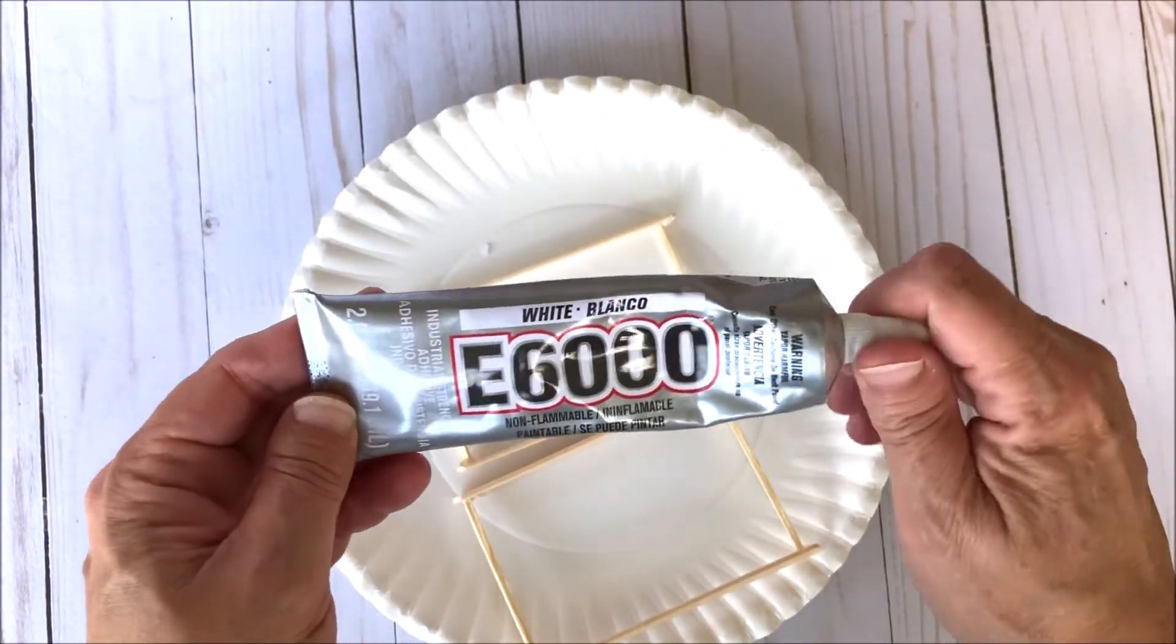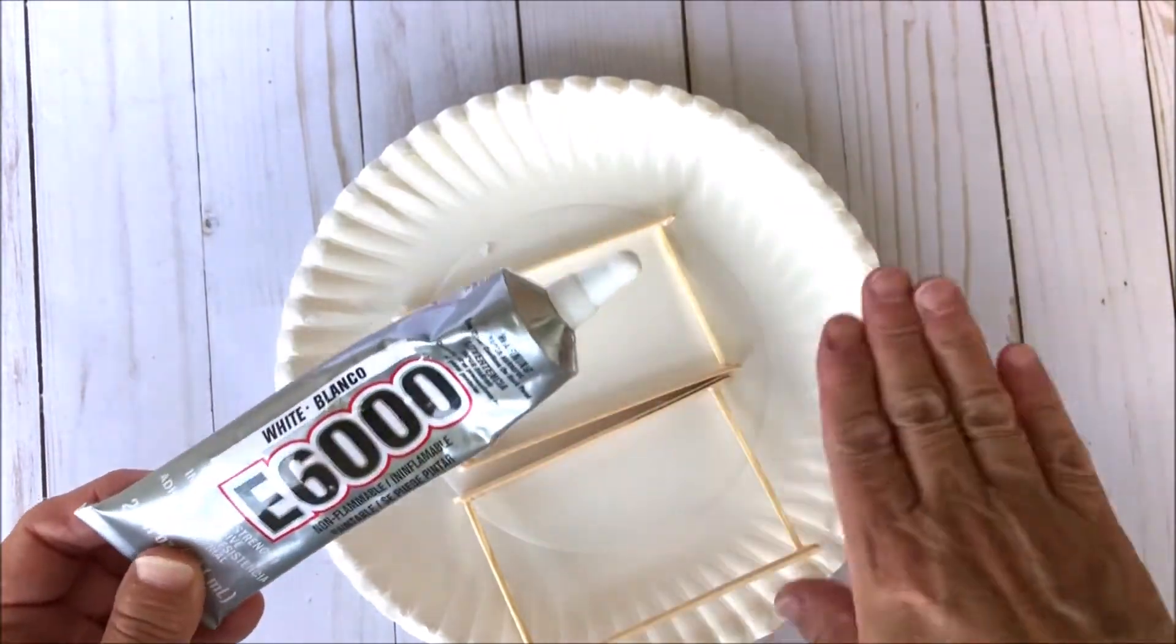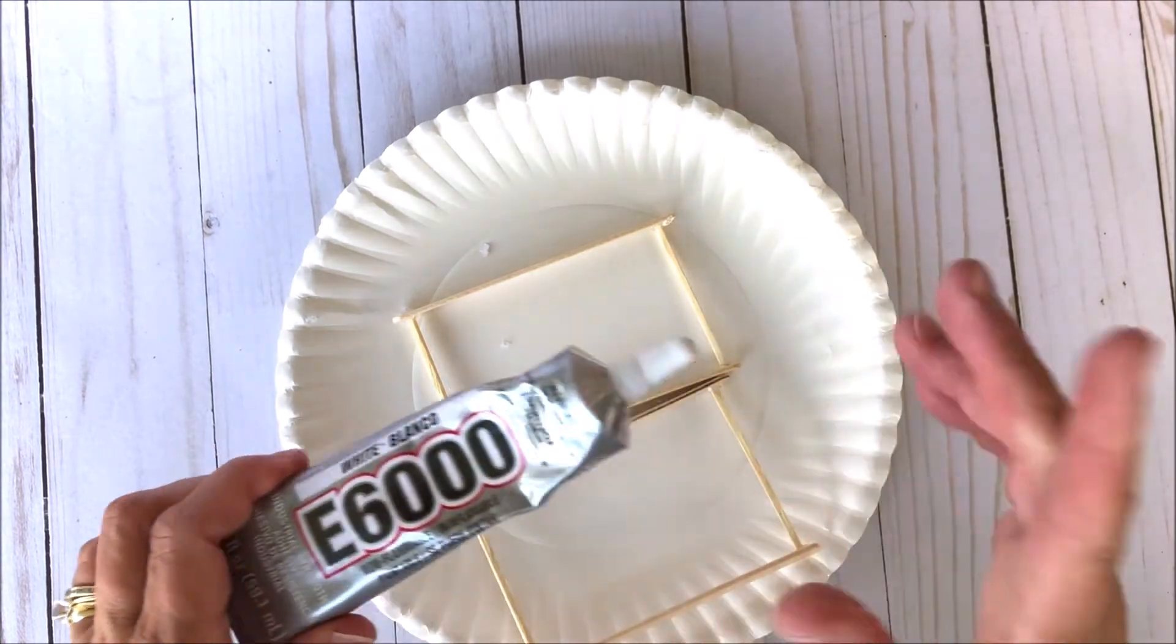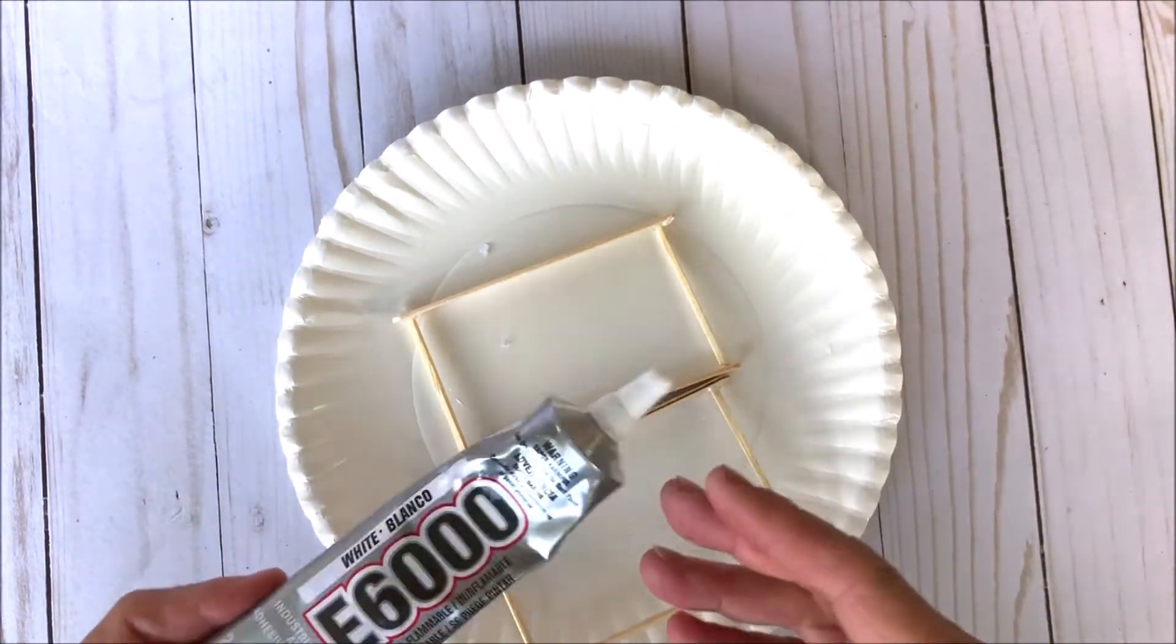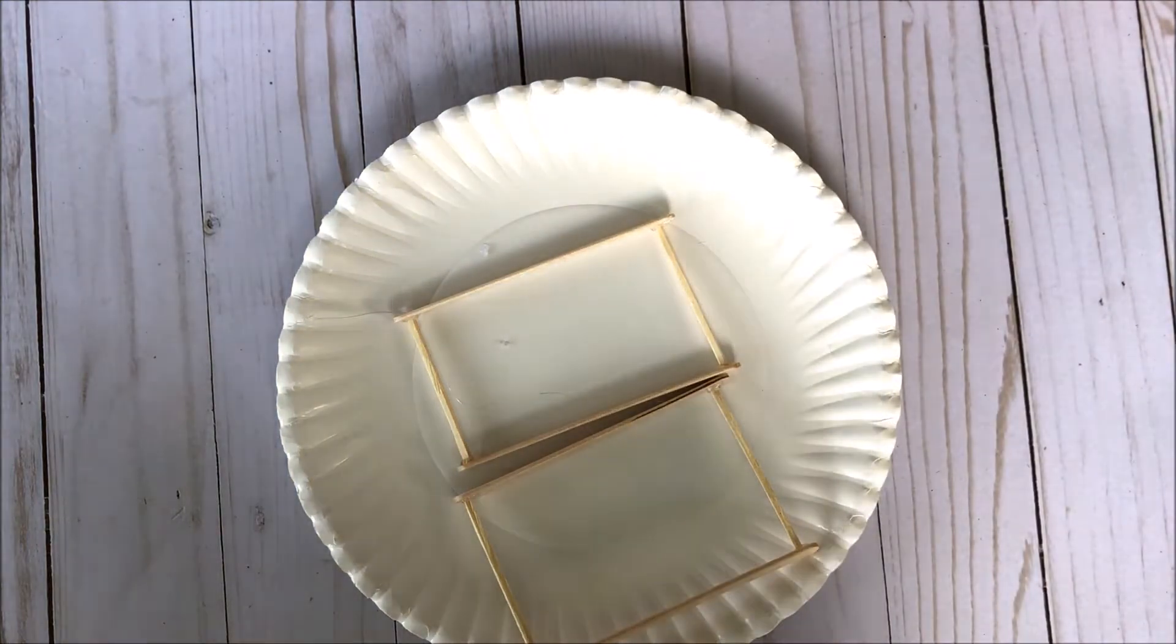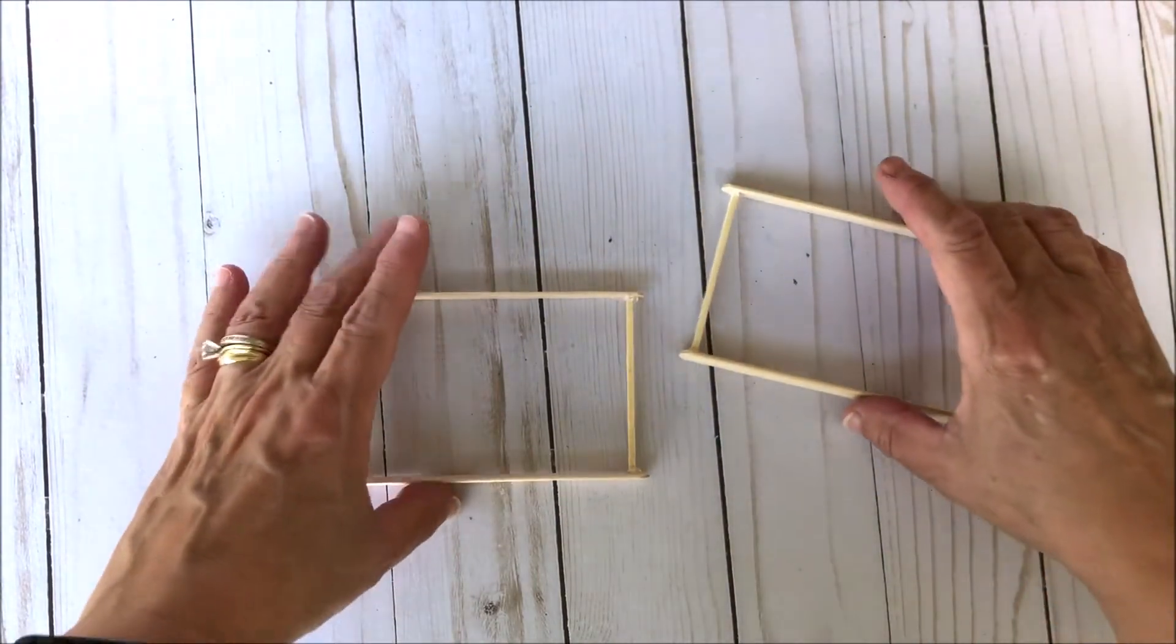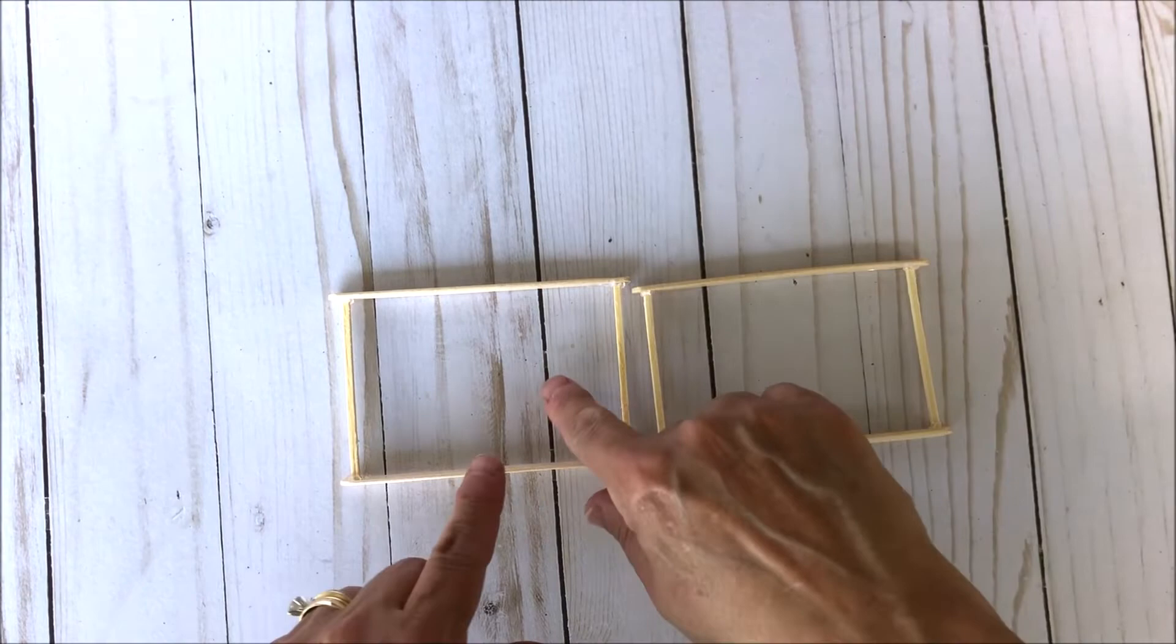Then you would let these dry. If you're using hot glue, it only takes like a minute or two for it to dry. You could also use like E6000 glue. That takes a little bit longer to dry I think. So you'd want to let them sit a little bit. You can really use any glue that you want to. I just find that the hot glue gun glue tends to dry a little bit faster.